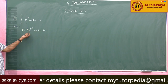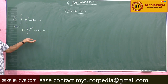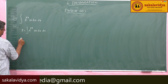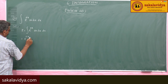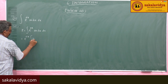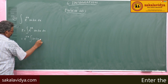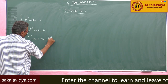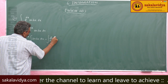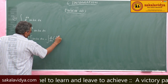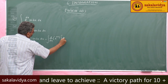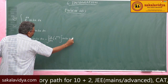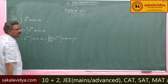You can take either e power ax as first function or sin bx as first function. So, e power ax is the first function and integral of sin bx dx, minus integral d by dx of e power ax, integral of sin bx dx, whole dx — using BIPODS.